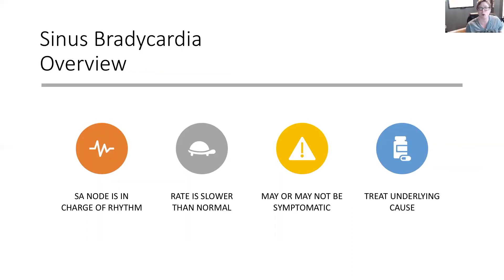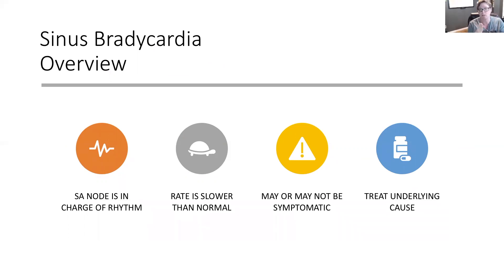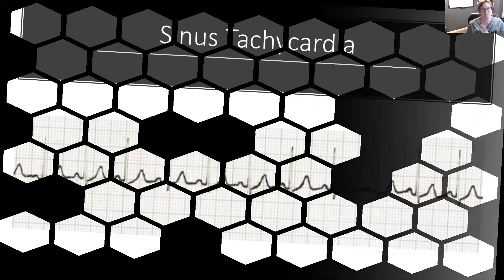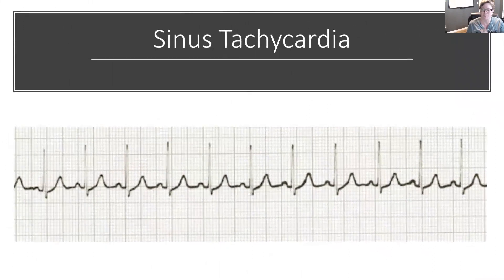Let's do a quick overview of sinus bradycardia. The SA node is still in charge of the rhythm because we have the P wave — a round, upright P wave means SA node is in charge. Everything is slowed down: a slower than normal rate, less than 60 beats per minute. It may or may not be symptomatic. We've got to find the cause in order to treat the main issue. The next section we're going to look at is sinus tachycardia.